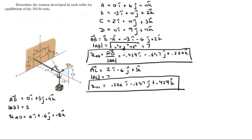The unit vector going straight down from the crate has no component in i or j, so unit vector C (the crate) is equal to −1k. The other two components are zero.